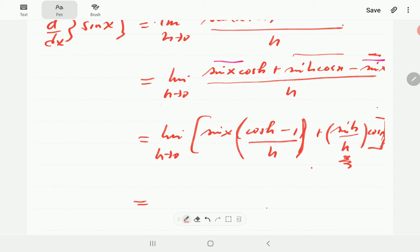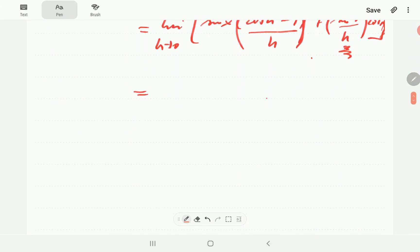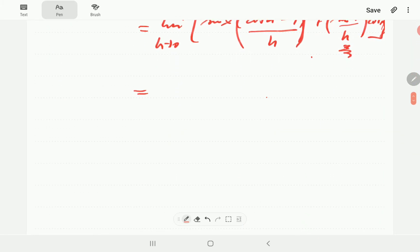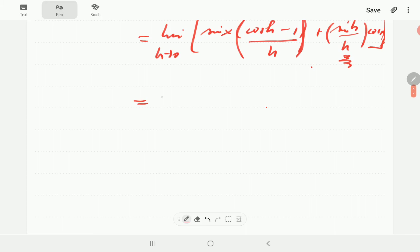But we're going to use this result to show that here. So what we can do now, we're going to write this as limit as h goes to 0 of sine x times cosine h minus 1 all over h. Then plus limit as h goes to 0 of sine h over h times cosine x.